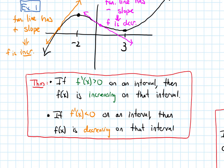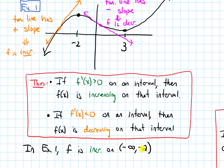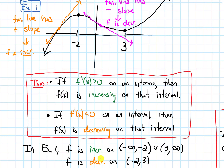In the context of Example 1, the function f is increasing — we can see it by looking at the graph — on the interval from negative infinity to negative 2, and also on the interval from 3 to infinity. The function is decreasing on the interval from negative 2 to positive 3. On that whole interval, all of the tangent lines have a negative slope and the function is decreasing there.